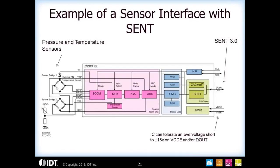A block diagram of a typical SENT sensor signal conditioner is shown here. It supports two bridges, two external temperature sensors, and an internal temperature sensor. Through configurations on the part, you can bring out any combination of bridge or temperature values through the SENT output, allowing for a lot of versatility in how your output is formatted. SENT also supports over-voltage and reverse battery protection — the industry standard is typically around plus or minus 18 volts on the supplies and on the SENT output.